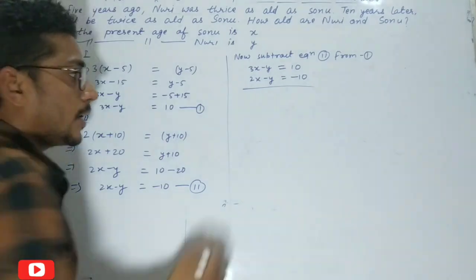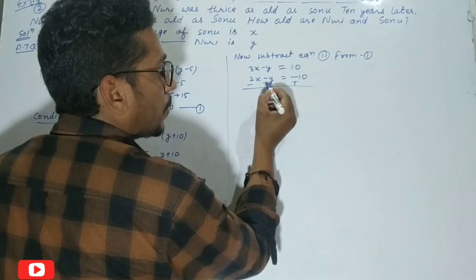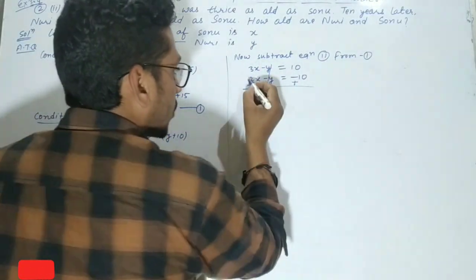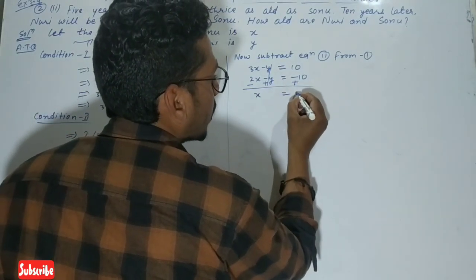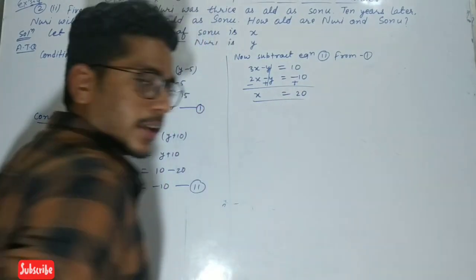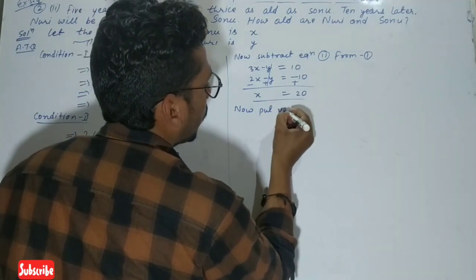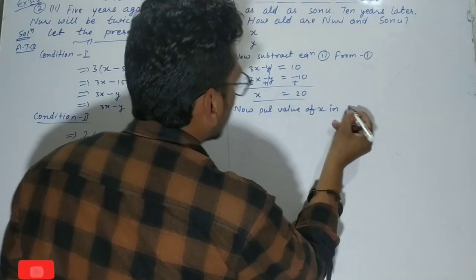Subtracting: 3x - y = 10 minus (2x - y = -10). The minus y terms cancel out. 3x minus 2x equals x. So x = 20.